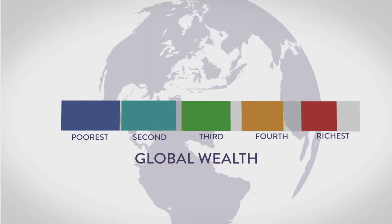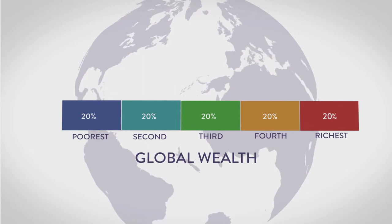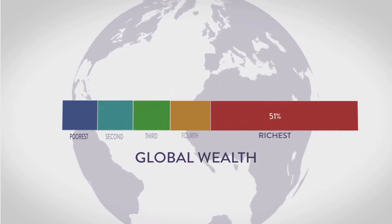Let's start with this graph. A perfectly even distribution of wealth among all living people, with everyone divided into 5 equal groups. Now, let's show how much each group actually has.